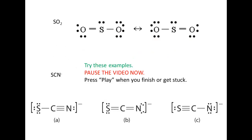Now I'd like you to try two examples. I've given you the structures for SO₂ and SCN⁻. Calculate the formal charges on each of the atoms in each of these structures, and decide if one structure is going to contribute more than the others. Please pause the video now and calculate these formal charges.